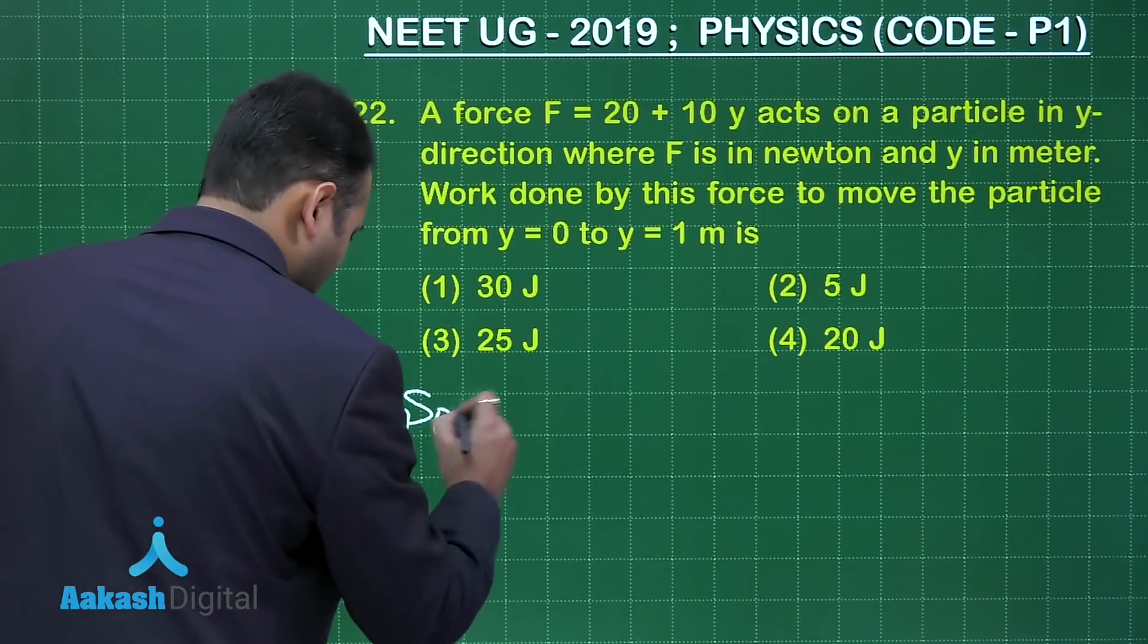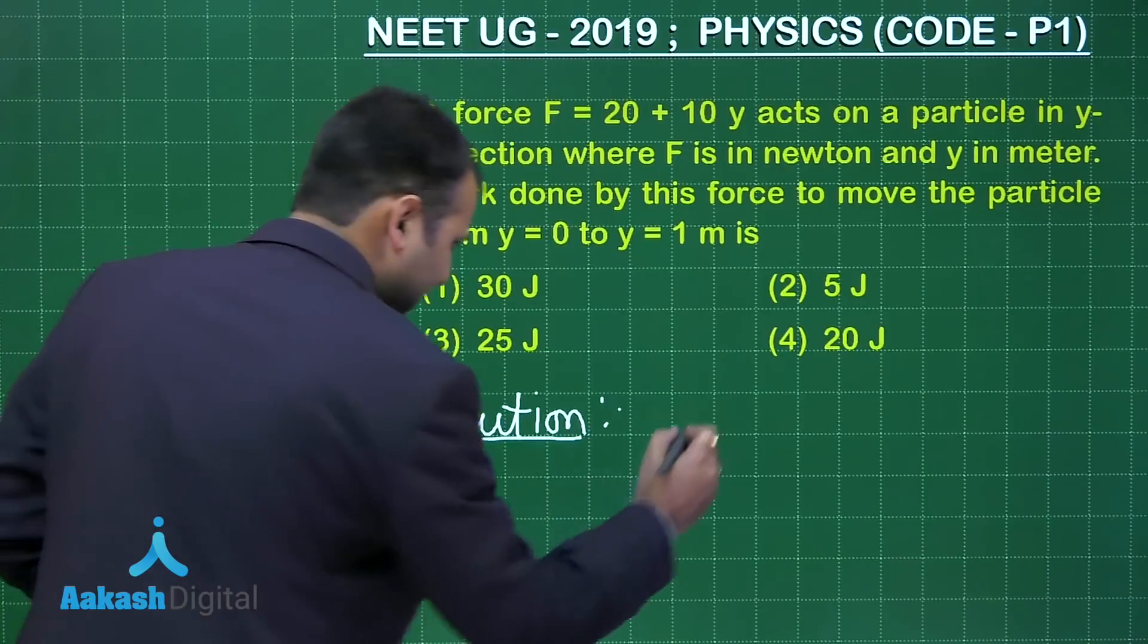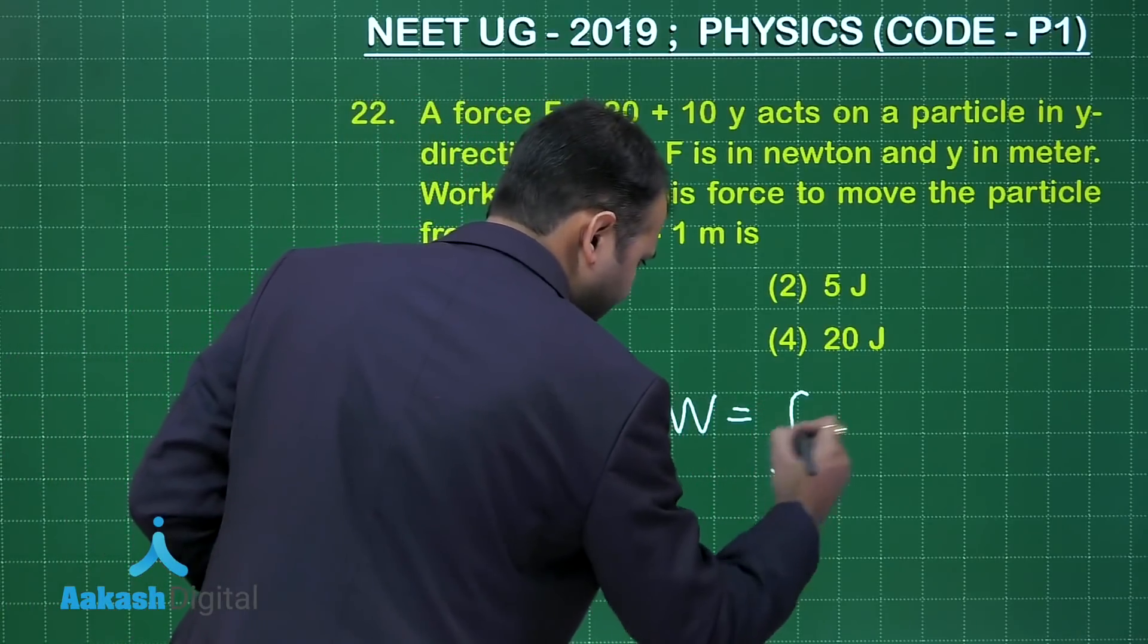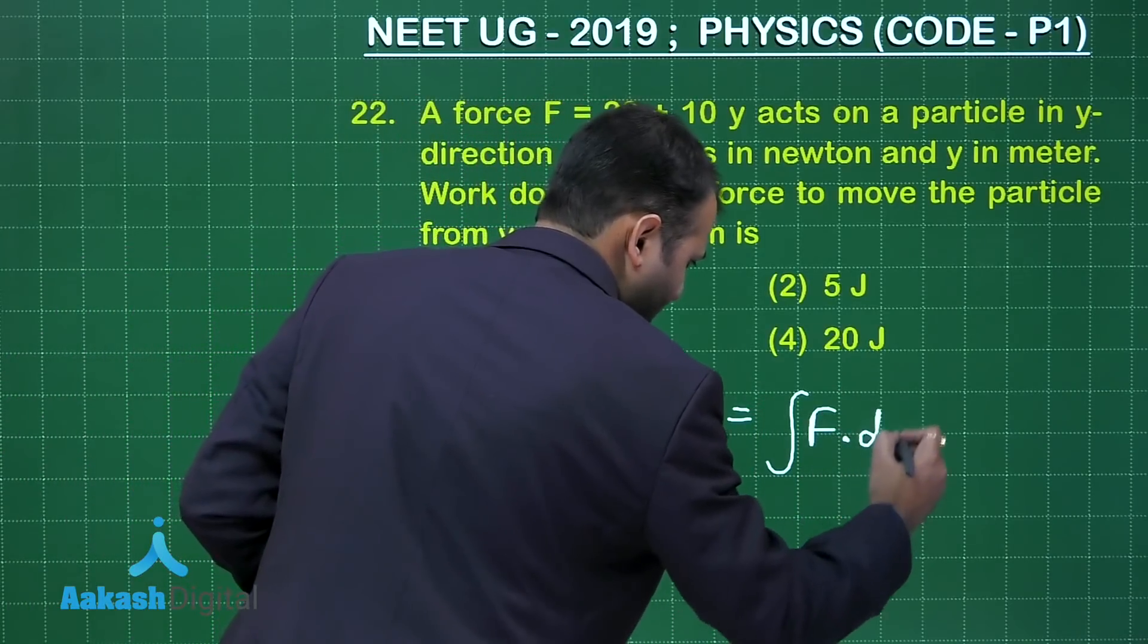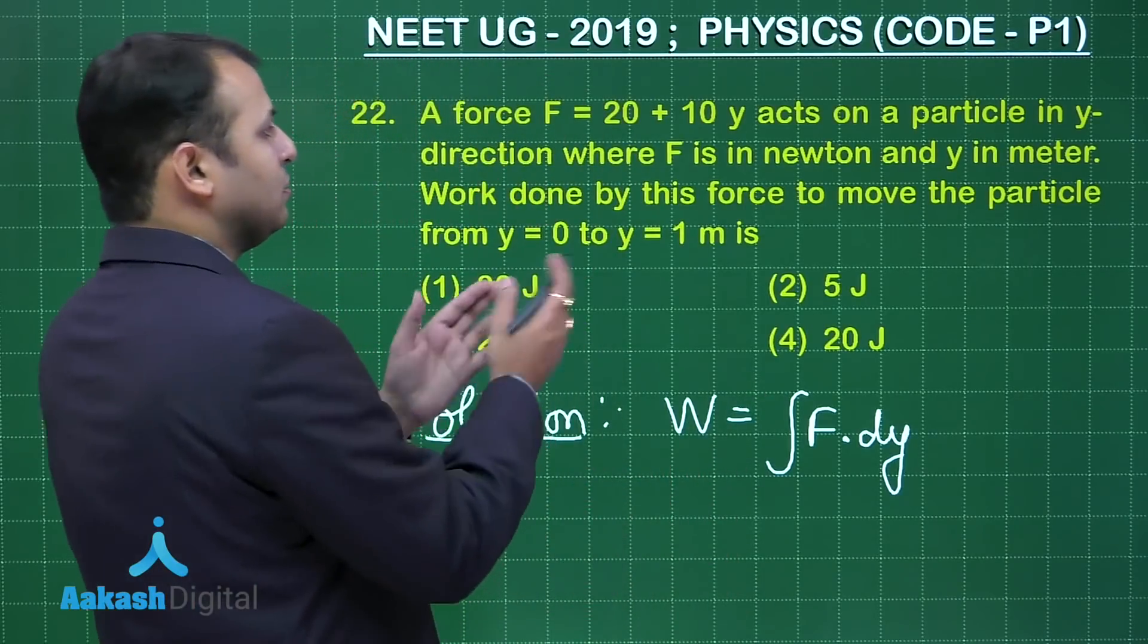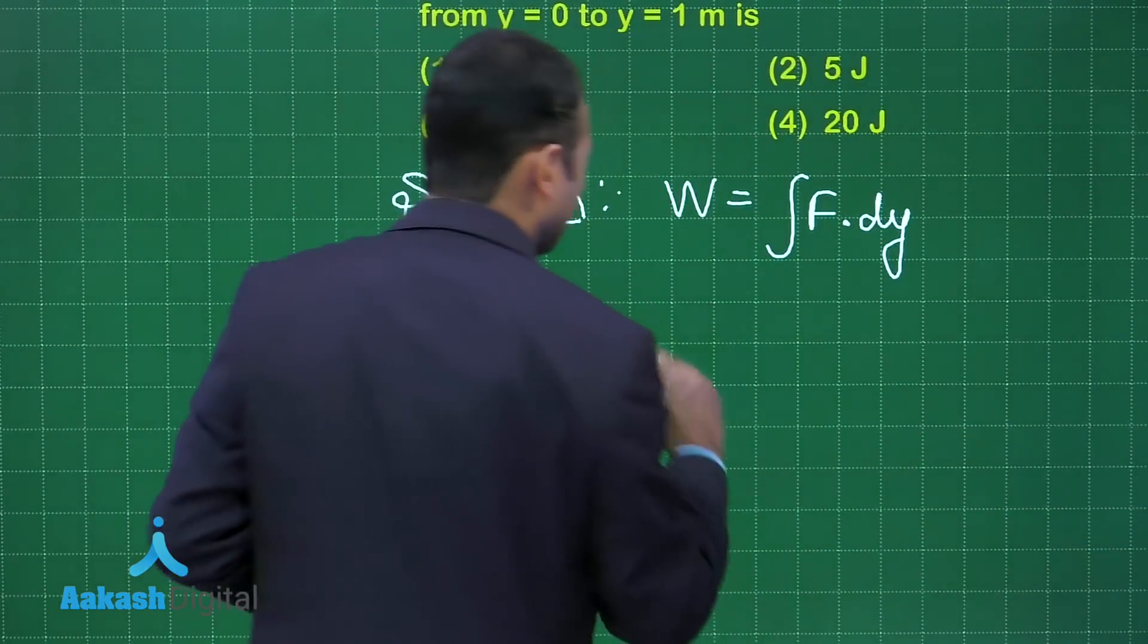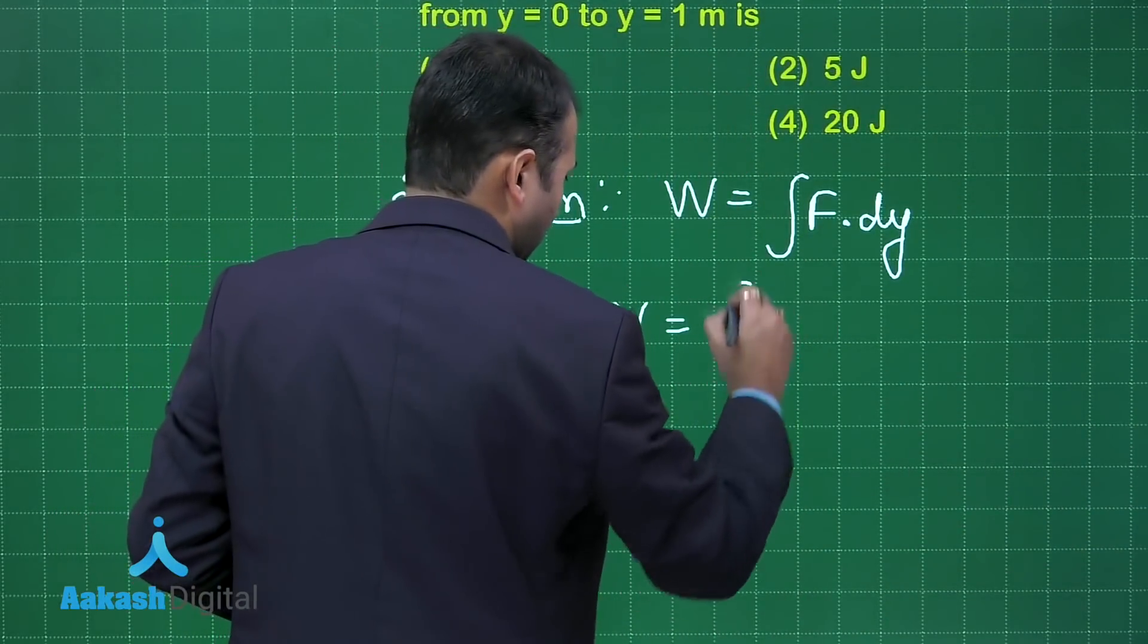It's a formula based question and when you have variable force, in that case work done would be integral of F dot dy, that is the dot product of force and displacement. Since they both are in same direction, cos 0.